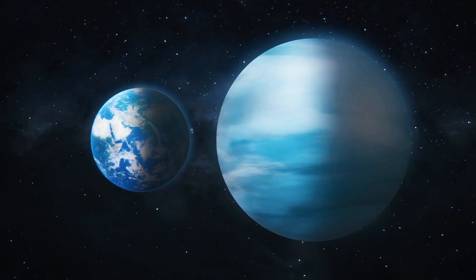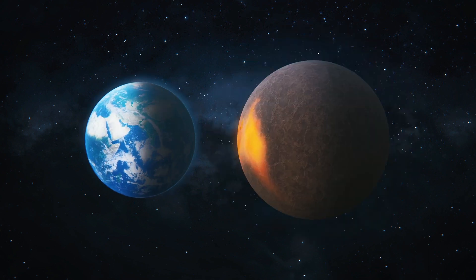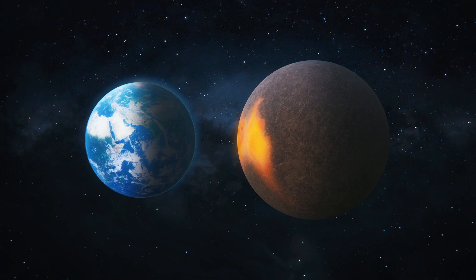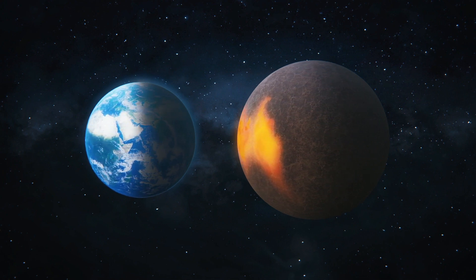The inner planet TOI 1266b is considered a sub-Neptune as it measures around two and a half times the Earth's diameter. The outer planet TOI 1266c is just over one and a half times the size of our planet, landing it in the super-Earth category.